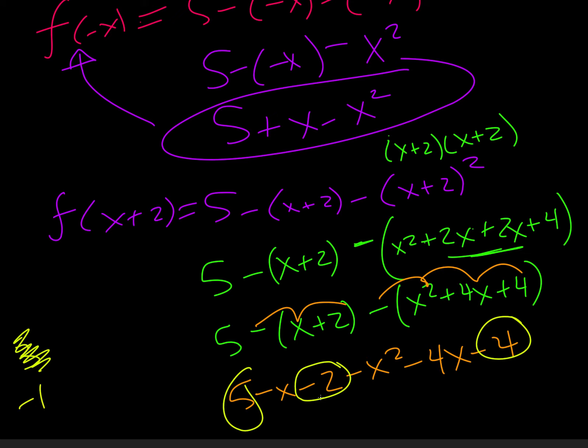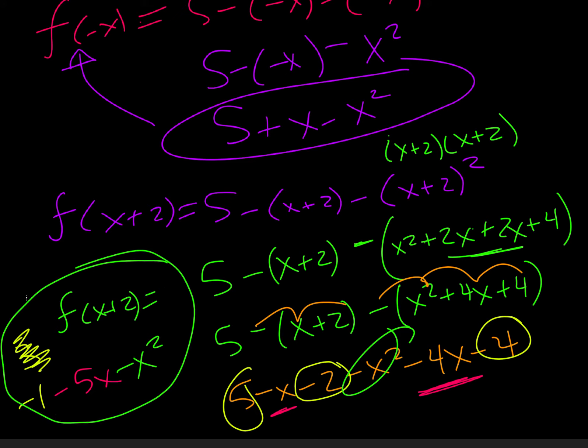And then we have negative 4x, negative x. So that's negative 5x. And then we just have our negative x squared. And so this was our f of x plus 2 is equal to this thing.